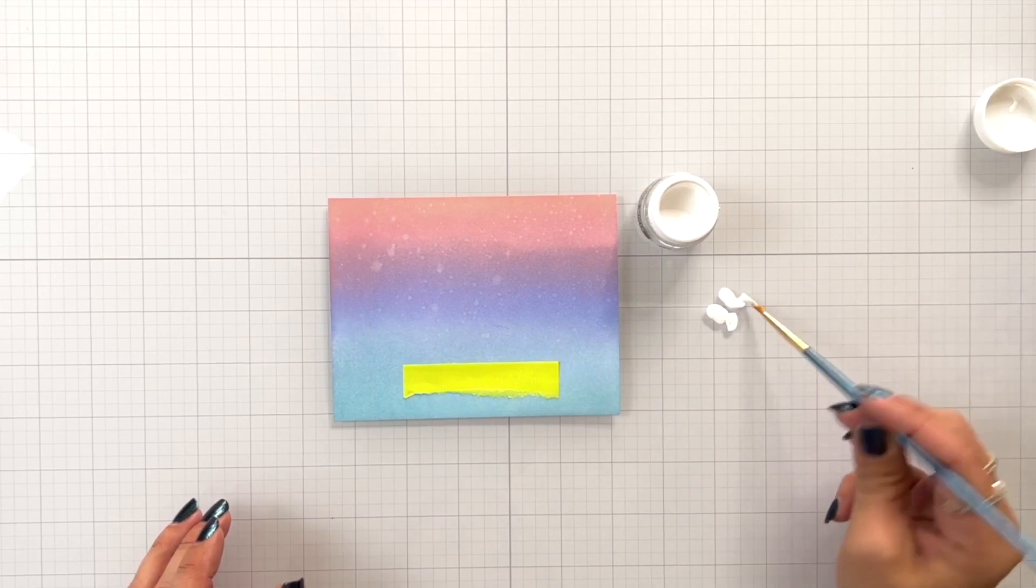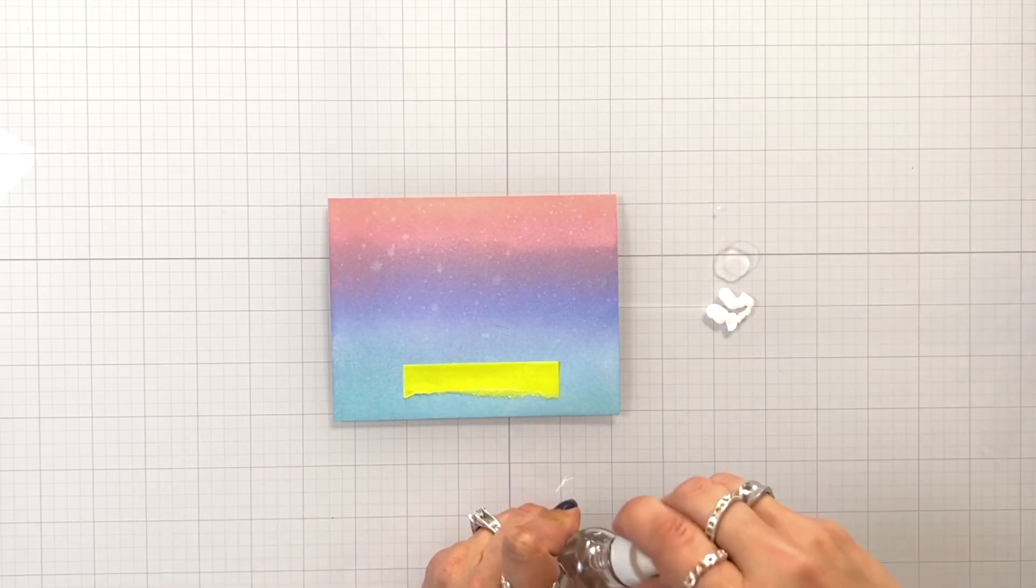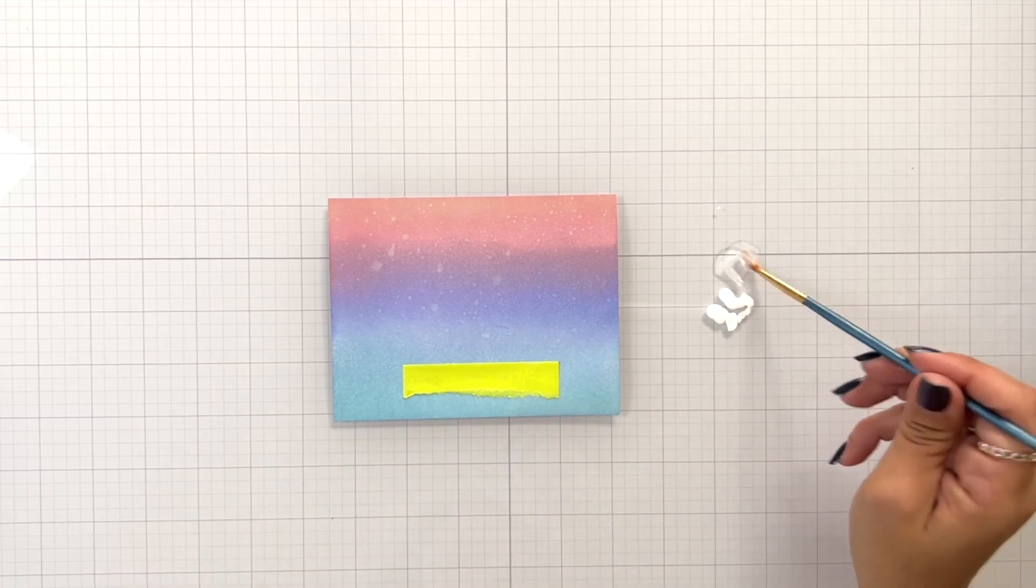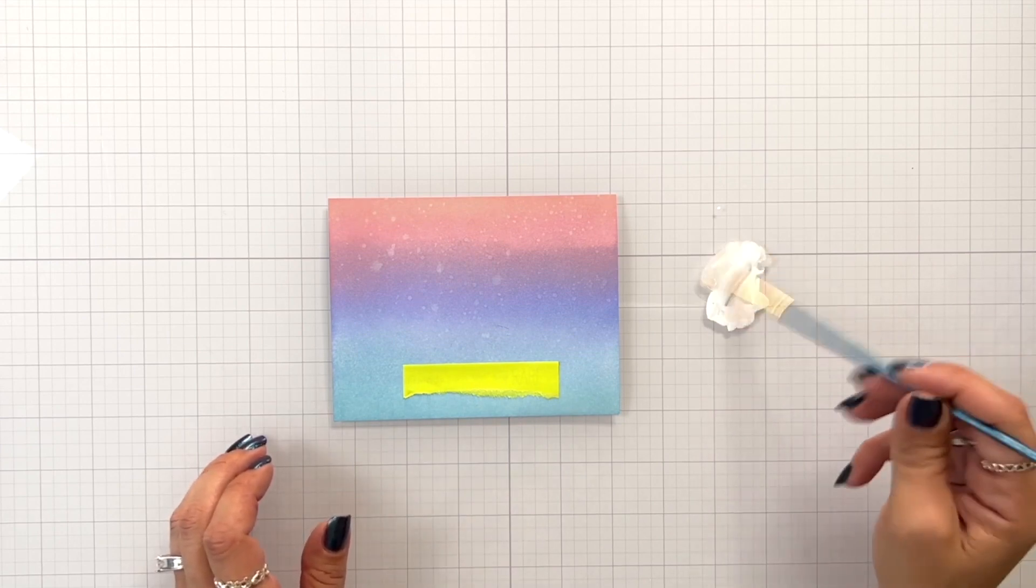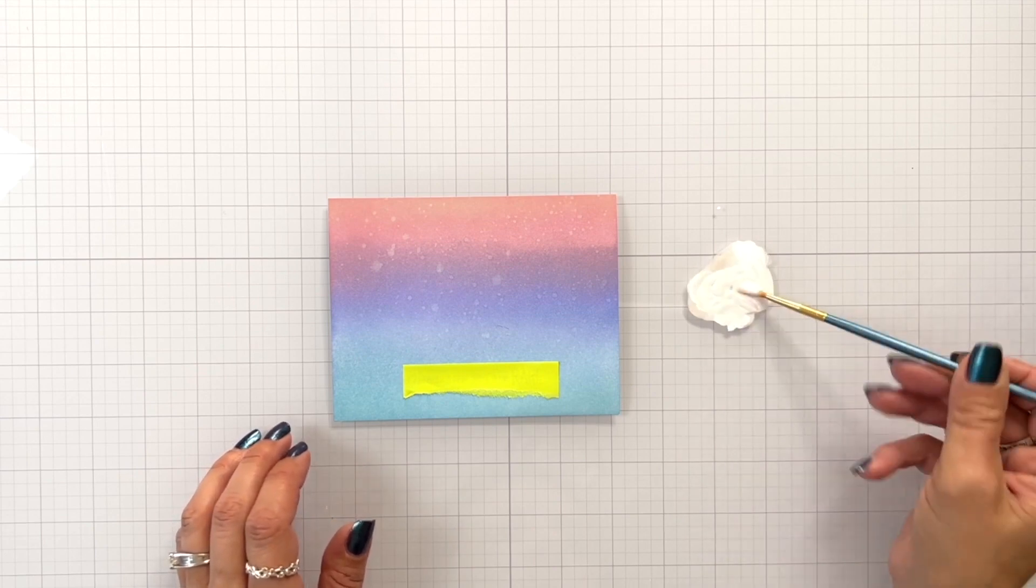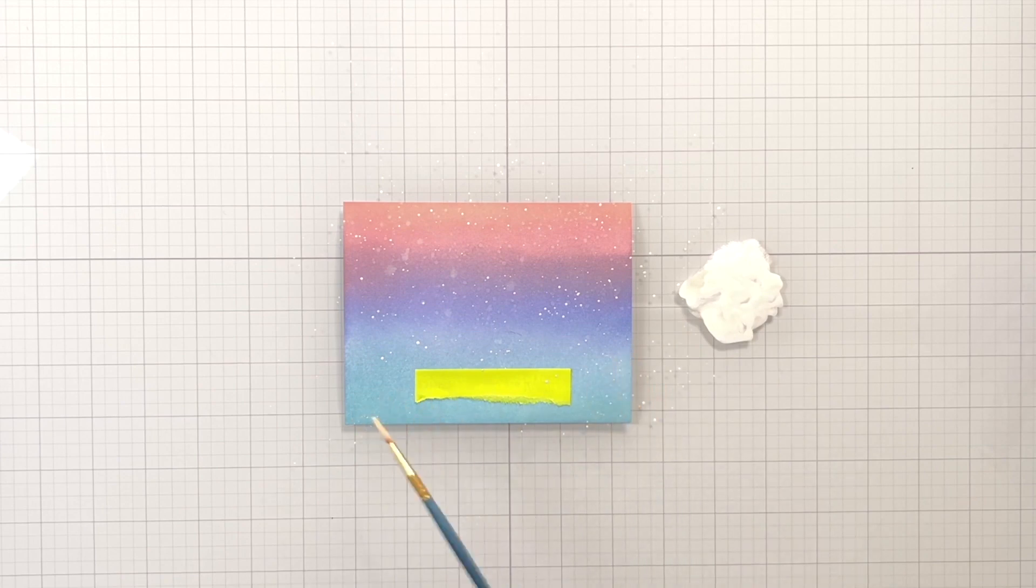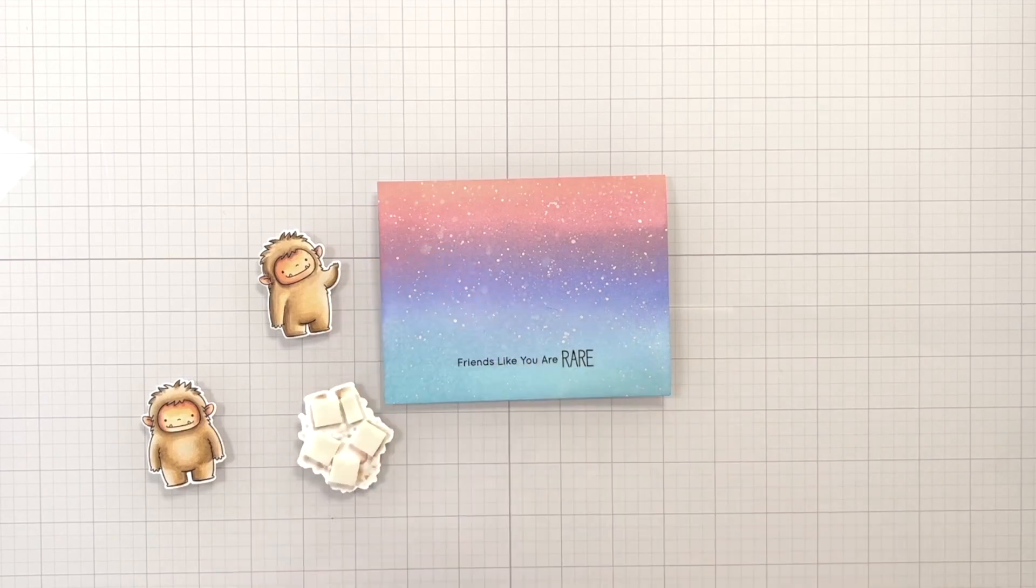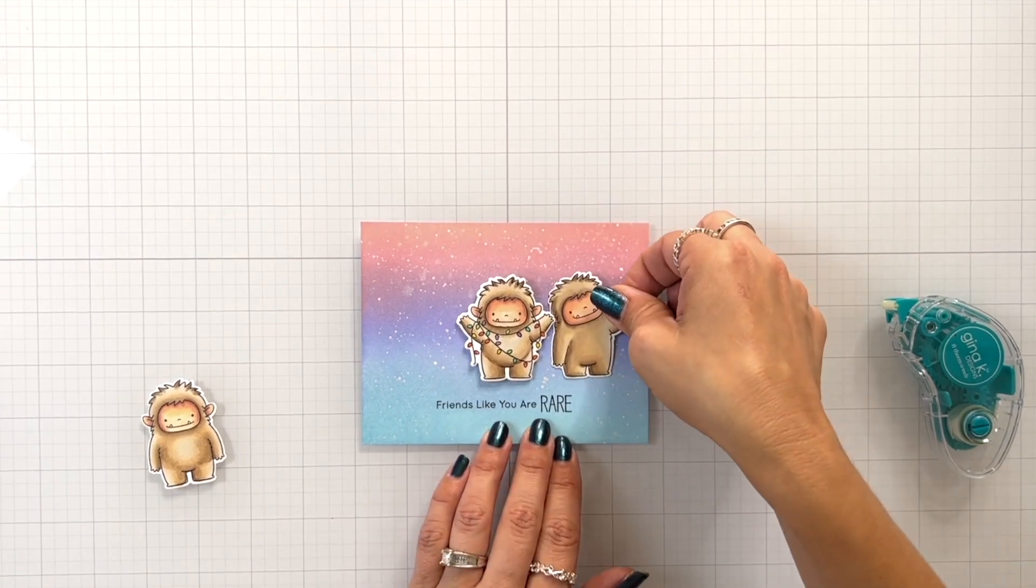I had one more set of splattering that I wanted to do, so I masked off my sentiment with a Post-it note. And this is some opaque Copic white ink and I added that to my surface along with a couple drops of water. I'm going to mix that together with my paintbrush, which apparently I did not clean, so there is a little bit of a kind of brownish tint to it. It still looks pretty white on the background, but it can be whiter, so I just need to remember to clean my paintbrushes.